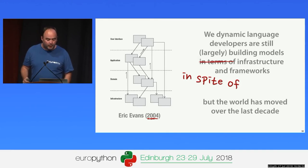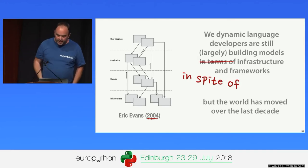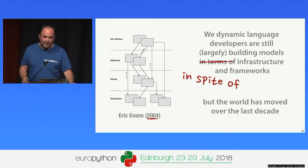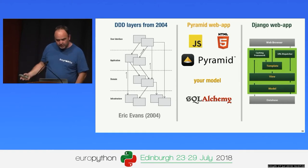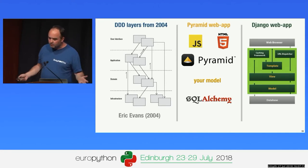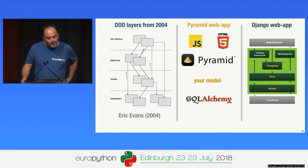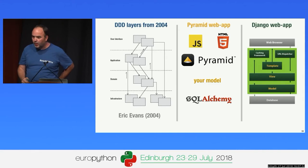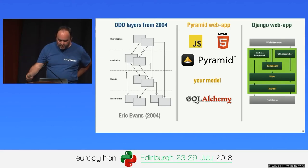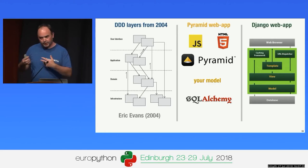This picture from around 2004 shows the classic layered architecture: a user interface — which these days tends to live in the browser — an application layer, a domain model, and some infrastructure. You can match that up against a Pyramid web app — JavaScript front end in the browser, Pyramid, your model perhaps implemented with SQLAlchemy — or a Django app, where you have the browser, model, and the Django ORM.